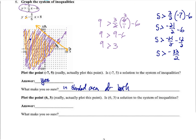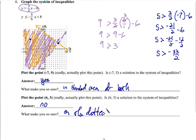Now the point (6, 3): it looks like maybe it's a solution because it's on the solid line. Any point from the solid line makes both sides equal, and that's fine because we have the 'equal to' there. But it's also on the dotted line. We actually did this earlier — (6, 3) made both sides equal, which is not okay because there's no equals sign in that first inequality. So it's on the solid line but also on the dotted line, and points on the dotted line are not solutions to that inequality.